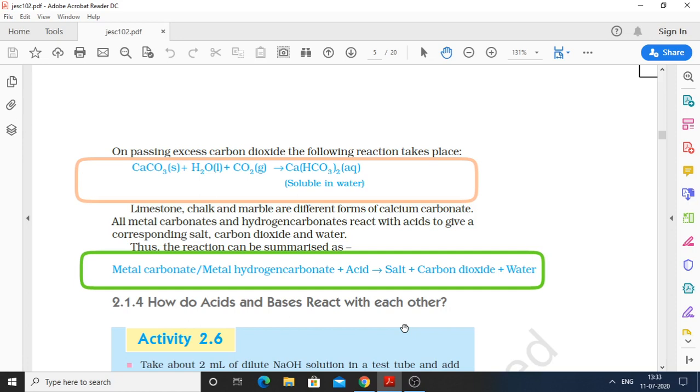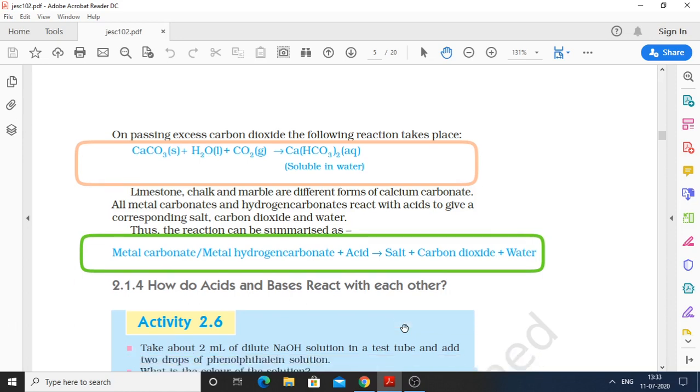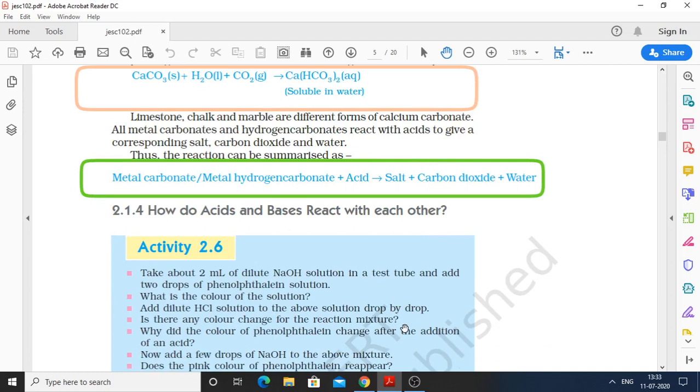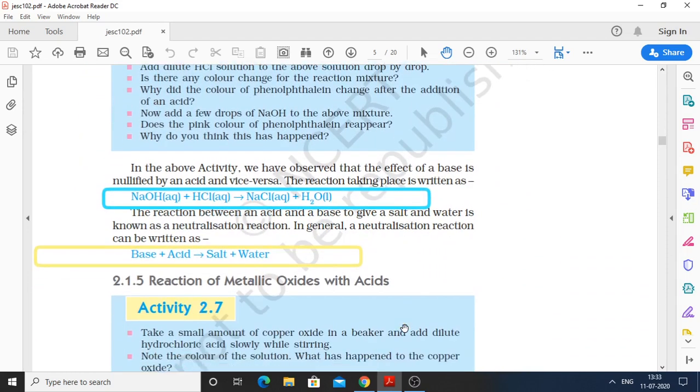Now, our next topic is how do acid and bases react with each other? We have a reaction including sodium hydroxide and hydrogen chloride. Sodium hydroxide, which is a base, and hydrogen chloride, which is acid. If we react both, then NaCl and water will form. It is a balanced chemical equation. The physical state is also mentioned.